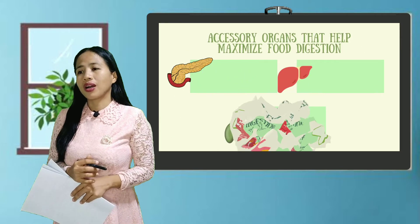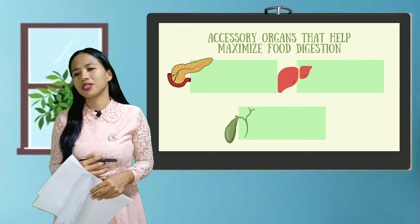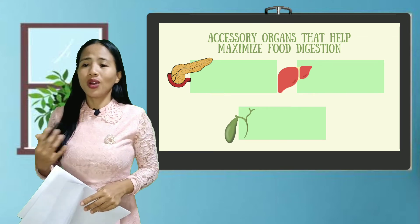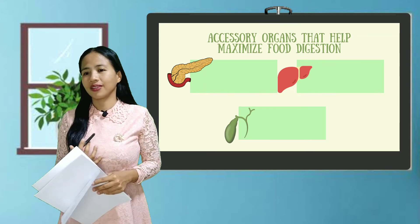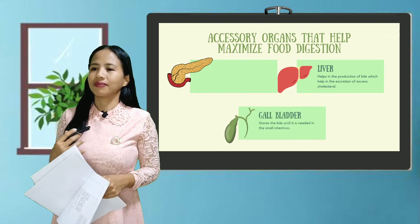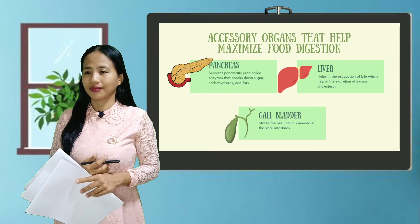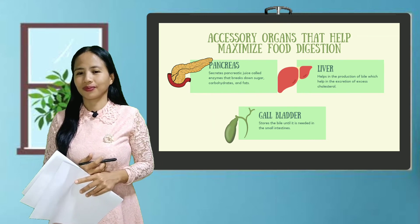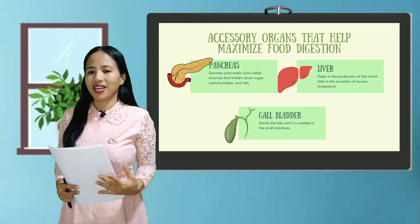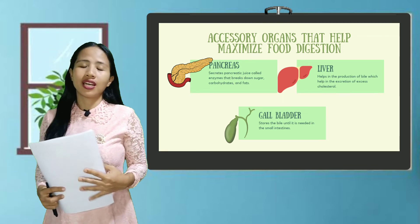There are also accessory organs that help to maximize the digestion of food. What are those? Mr. Paner: the pancreas, the liver, and the gallbladder. Very good. In what ways do these organs help in digestion? The liver helps in the production of bile, which helps in the excretion of excess cholesterol. The gallbladder stores the bile until it is needed in the small intestine. The pancreas secretes pancreatic juice — enzymes that break down sugars, carbohydrates, and fats. I'm sure you now understand how digestion takes place and how the different organs of the digestive system work together.